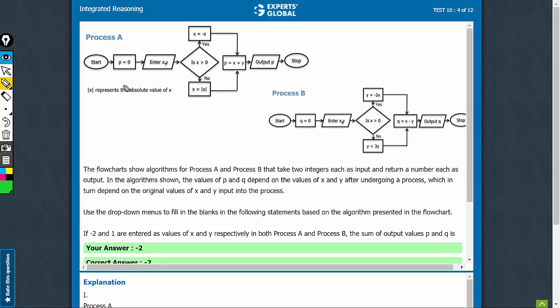So, let's put minus 2 comma 1 here. Is x greater than 0? No. So, x is equal to mod x. x becomes 2 here.